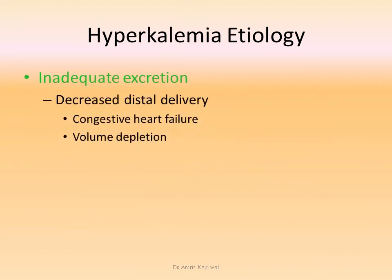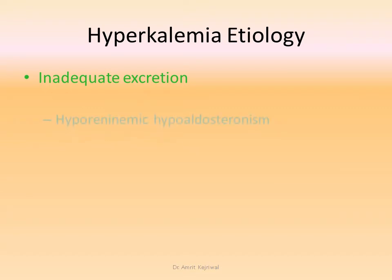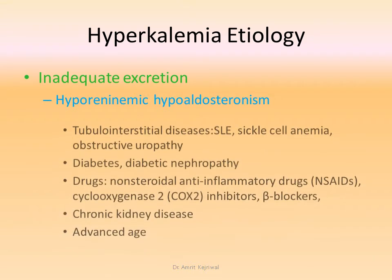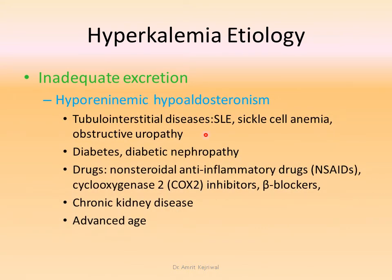Inadequate excretion may also be due to congestive heart failure and volume depletion, which is caused by decreased delivery in the distal part. Hyporeninic hypoaldosteronism is seen in tubular interstitial disease such as SLE, sickle cell anemia, obstructive nephropathy, diabetes, diabetic nephropathy, drugs, chronic kidney disease, and advanced age.